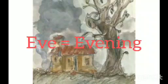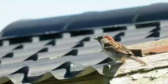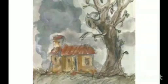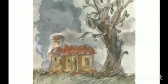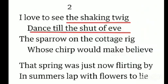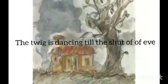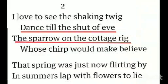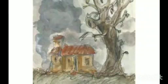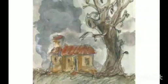Eve means evening. And in the next line it is written: 'The sparrow on the cottage rig.' On the top of the cottage roof, the poet is watching a sparrow. Now here, if we take into consideration the rhetorical device of inversion, we can agree the verb 'dance' with the subject 'twig' — meaning the twig is dancing. But if the verb 'dance' agrees with the subject 'sparrow' in the next line, the meaning is different: the poet watches the dance of the sparrow which is on the cottage rig. I am not sure which meaning of the line is appropriate.